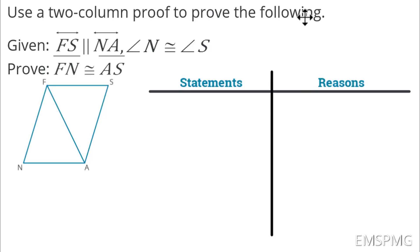We need to use a two-column proof to prove the following. We're given that the two lines, FS and NA are parallel, and that angle N is congruent to angle S. We're proving that segment FN is congruent to segment AS.